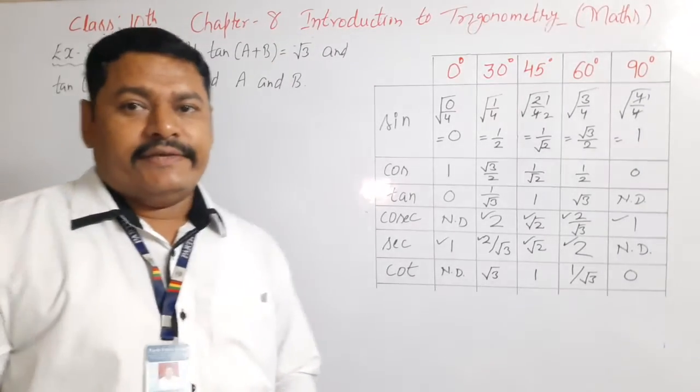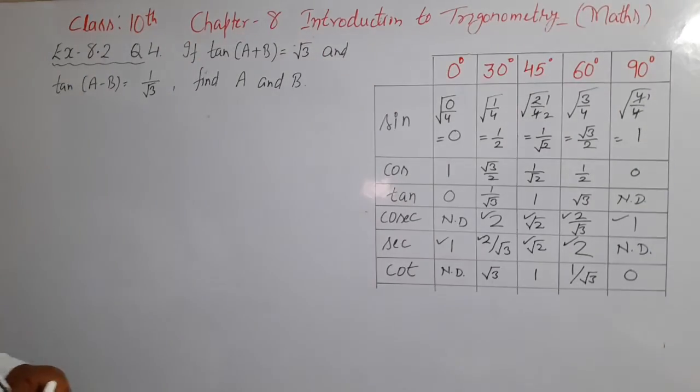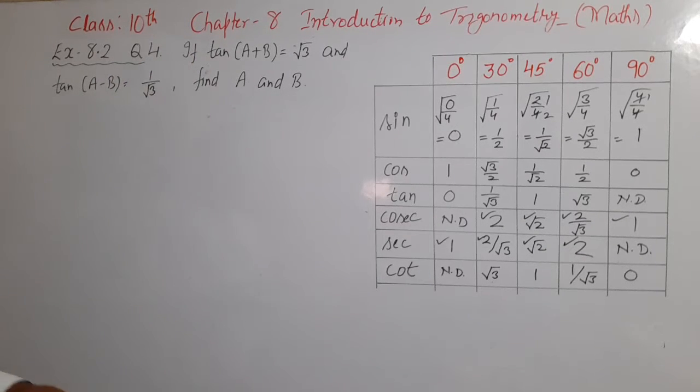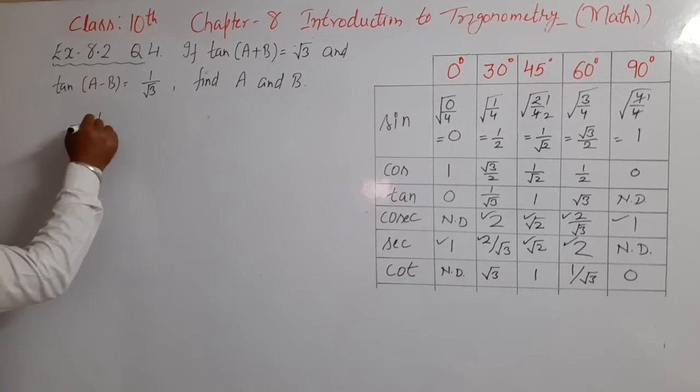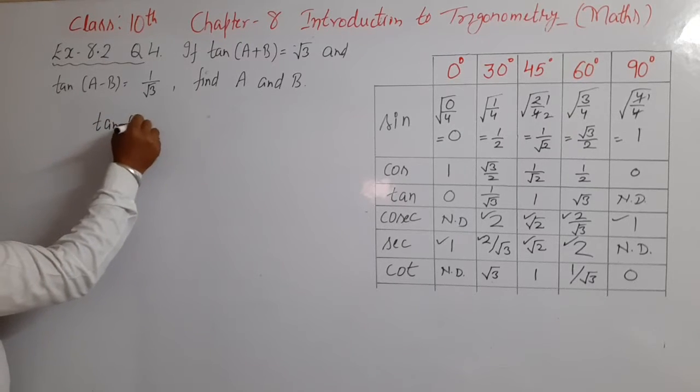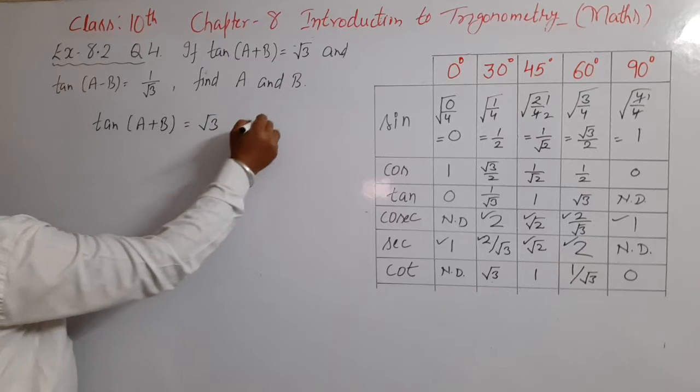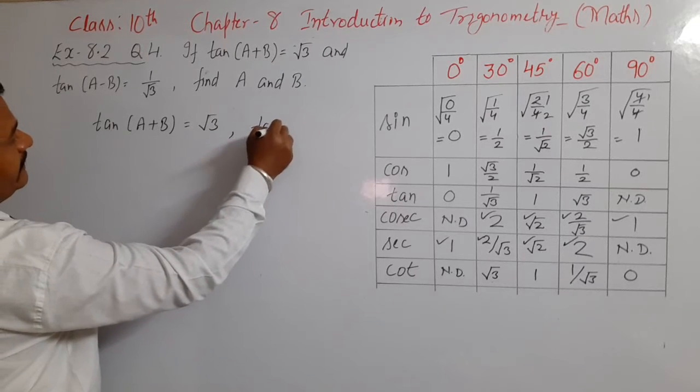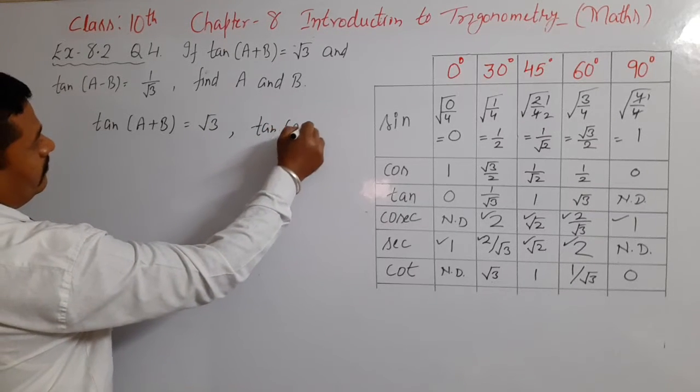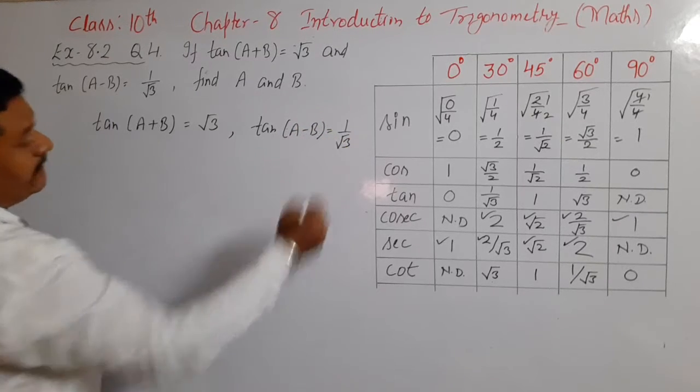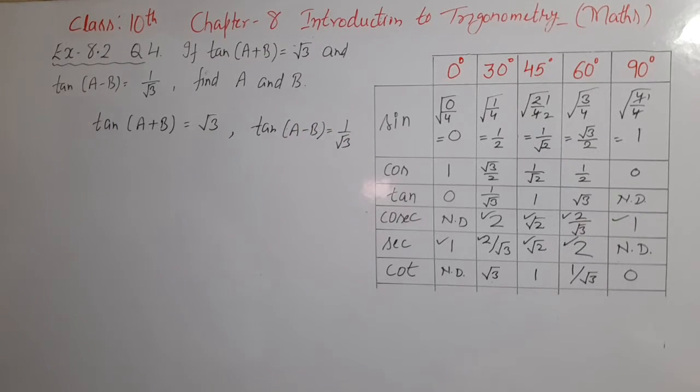Okay, so let us do one more question. Exercise 8.2, question number 4. In this question it has been given that tan(A+B) is equal to root 3, and tan(A-B) is equal to 1 upon root 3. And we have to find the values of A and B.